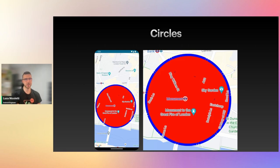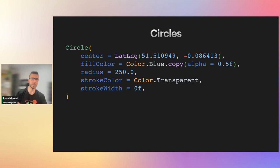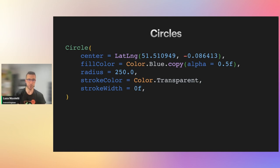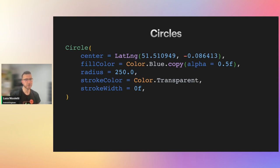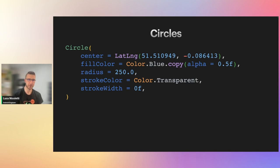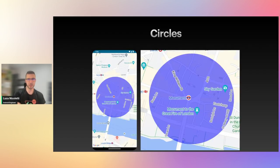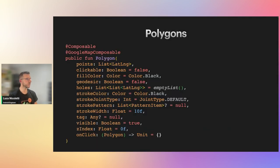You can hide the border of the circle by setting the stroke color to transparent or changing its width to zero. The Circle composable doesn't have a transparency parameter, so if you want a semi-transparent color, you specify the alpha inside the fill color — for example, copying a blue color and setting the alpha to half. That will be the result.